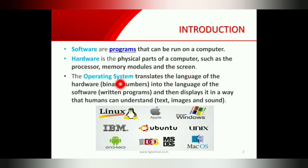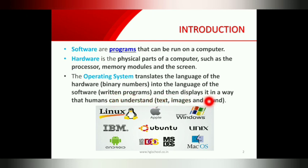Now, the operating system. The operating system translates binary numbers. Binary language is the machine language that hardware understands. So the operating system converts binary language into the language of the software — the written programs — and displays it in a way we can understand, like text, images, and sound. We can say the operating system creates an interface between the user and the hardware.